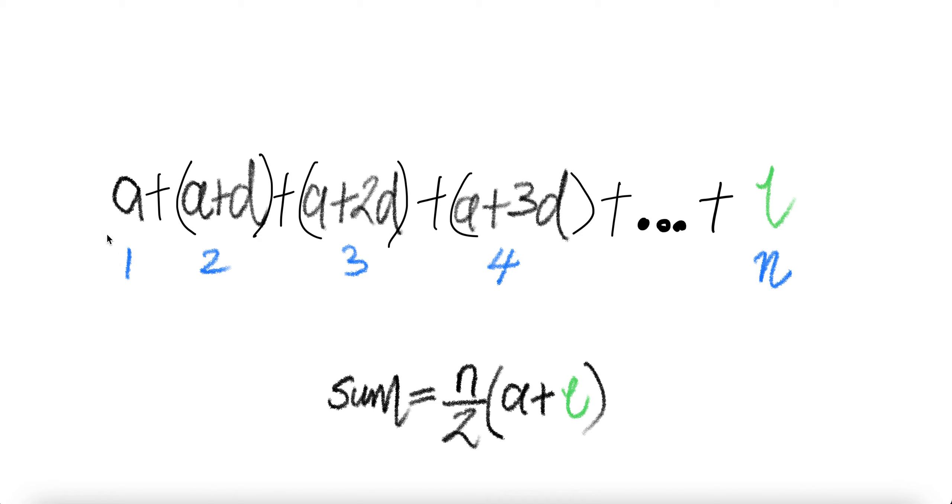So to get the sum of these, you just go number of terms. You count one, two, blah, blah, blah to n. There are n terms, divide by two, value of the first term A, value of the last term L. You just sum A plus L times n divided by two will get you the sum of all this.